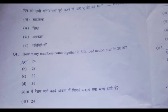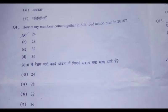Question 10: How many members come together in the Silk Road Action Plan in 2010? A: 24, B: 28, C: 32, D: 36.